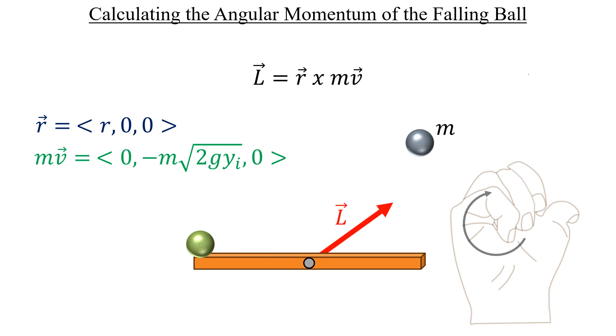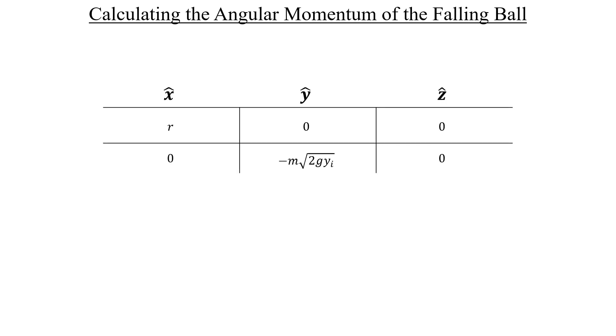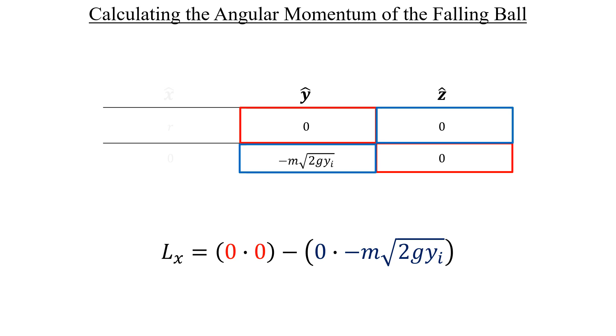Based on this drawing, the L vector points in the negative z direction, into the screen. So if we do our cross product correctly, we should get a result that matches this. Let's see if we're right. Here's our table of X, Y, and Z components for r and mv. Starting with the X component of the L vector, we want to ignore the X component column and multiply red with red and blue with blue like we've seen before.